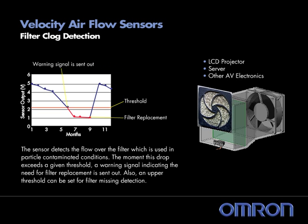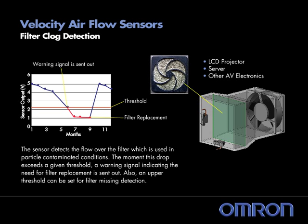A prime application for the air velocity sensors is to monitor flow rates for clogged filter detection in equipment, including computer servers, audio-visual equipment, and remote installations such as telecom cabinets. Another common application is monitoring for proper velocities in installations such as laboratory chemical hoods.